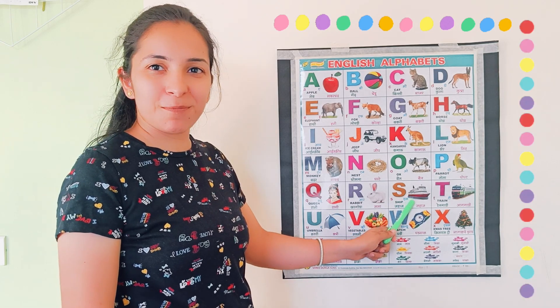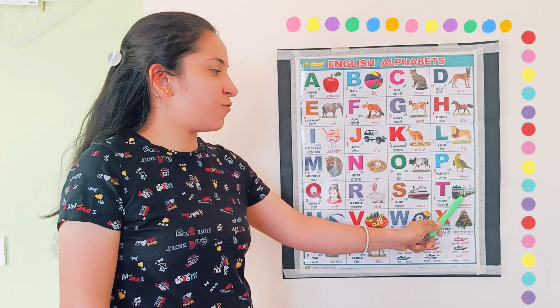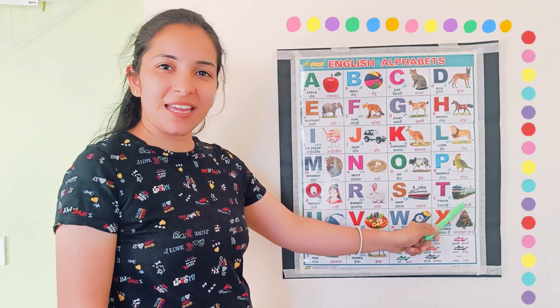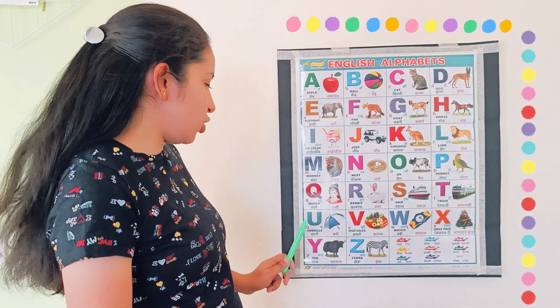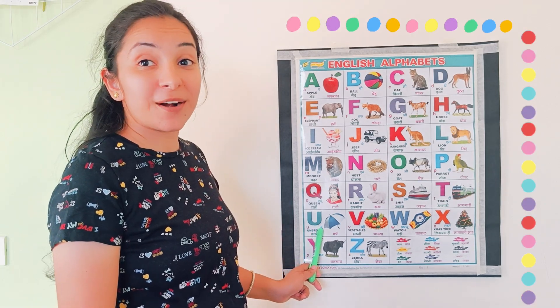S. S for ship. T. T for train. U. U for umbrella.